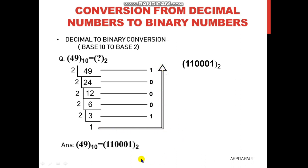So the number 49 in base 10 is 110001 in base 2. This is very easy. Whenever a number is given in decimal and you have to convert it to binary, you divide that number by 2, write the remainder on the right hand side, and then from bottom to up you write all the remainders to get the output.